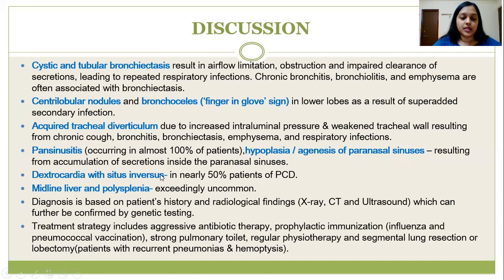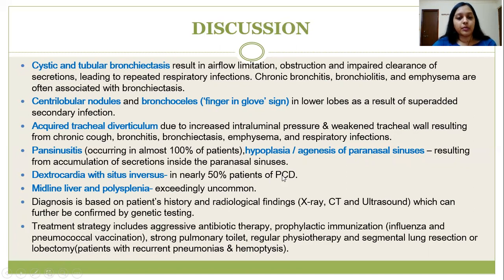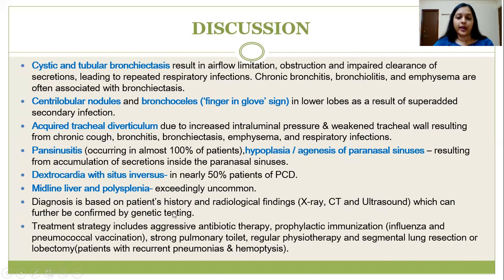Dextrocardia with situs inversus is present in nearly 50% of patients with primary ciliary dyskinesia, which immediately raises suspicion of a genetic disorder with multi-organ involvement since it is a very uncommon radiological finding. Another finding in our patient was that of midline liver and polysplenia, which is a rare coincidence in Kartagener's syndrome. Diagnosis is based on patient history and radiological findings — X-ray, CT, and ultrasound — which can further be confirmed by genetic testing.